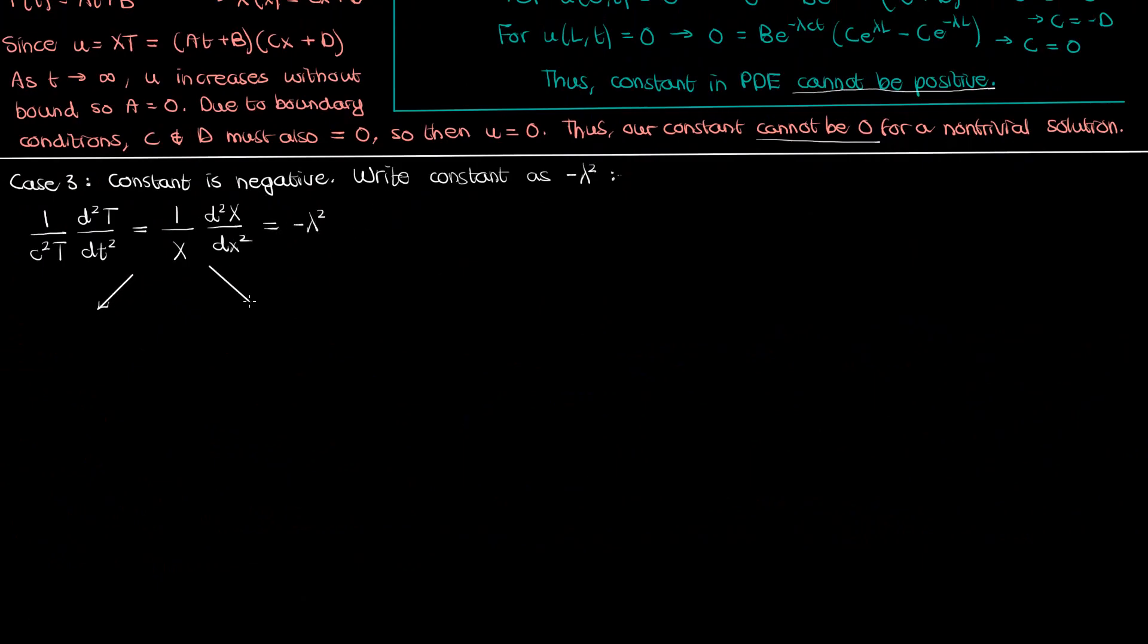We can break up this expression into two separate ordinary differential equations, one in terms of t and the other in terms of x. If we rearrange the equation in t we'll get the second derivative of capital T with respect to time plus lambda squared c squared times capital T equals 0. If you solve this equation using the very basic rules you learned back in your ODEs class you find that capital T is just a sum of sines and cosines.